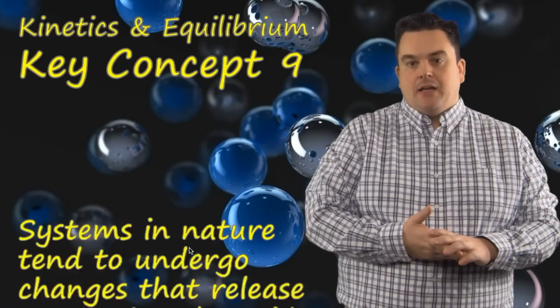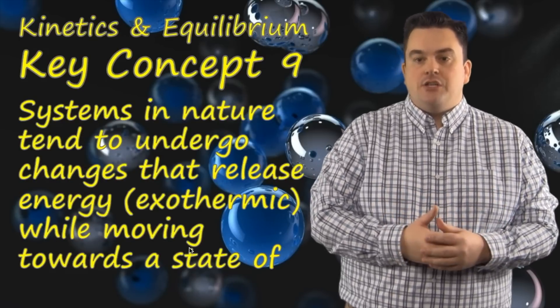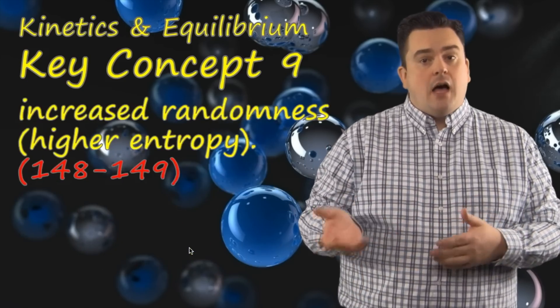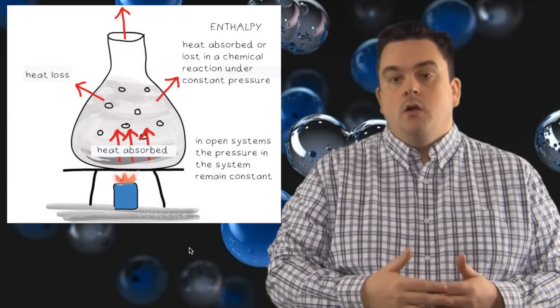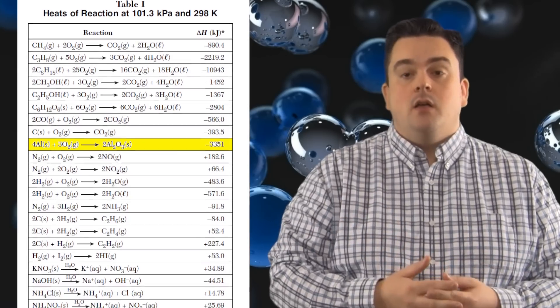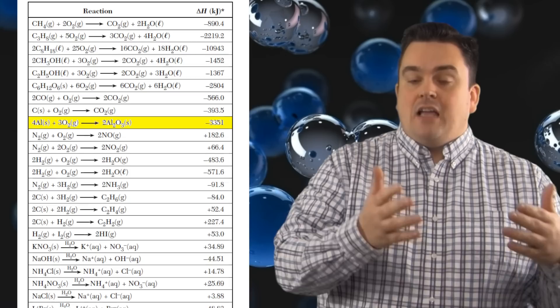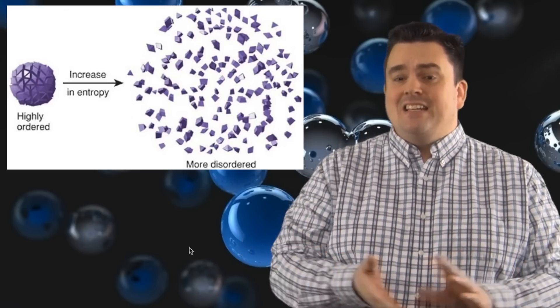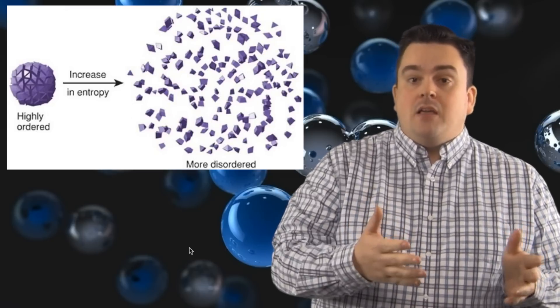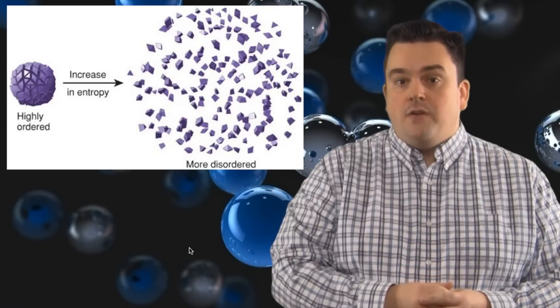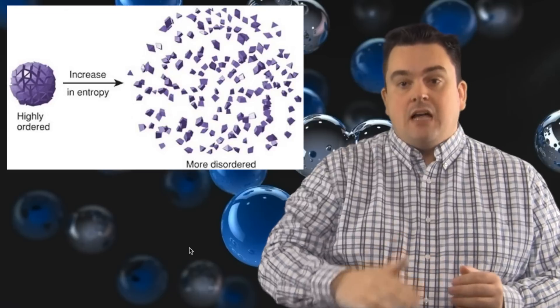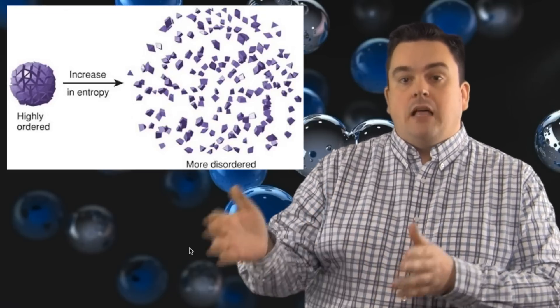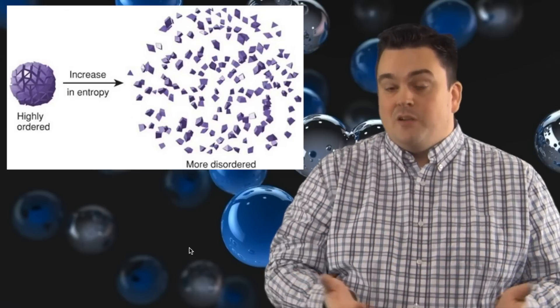Kinetics in Equilibrium, Key Concept 9. Systems in nature tend to undergo changes that release energy (exothermic) while moving toward a state of increased randomness — higher entropy. Heat always flows from high to low, because systems in nature tend to release their energy. To determine whether a reaction is endothermic or exothermic, go to Table I: if the delta H value is negative, the reaction is exothermic; if positive, it's endothermic. Entropy — which is randomness, chaos, disorder, messiness, whichever term works for you — can be determined by looking at a chemical reaction and focusing on the phases. Gases have the highest entropy and solids have the lowest. Look at your chemical equation from left to right to see what happened to the phases to determine the increase or decrease in entropy.